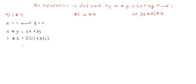Now we simplify. 2 bracket 1 means 2 times 1, which is 2. Put back the plus sign, and 3 bracket 2 means 3 times 2, which gives us 6. And 2 plus 6 gives us 8. So therefore 1 asterisk 2 is equal to 8.